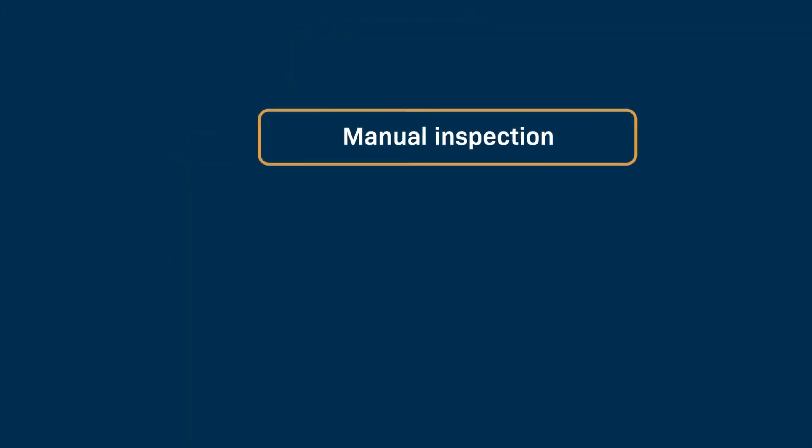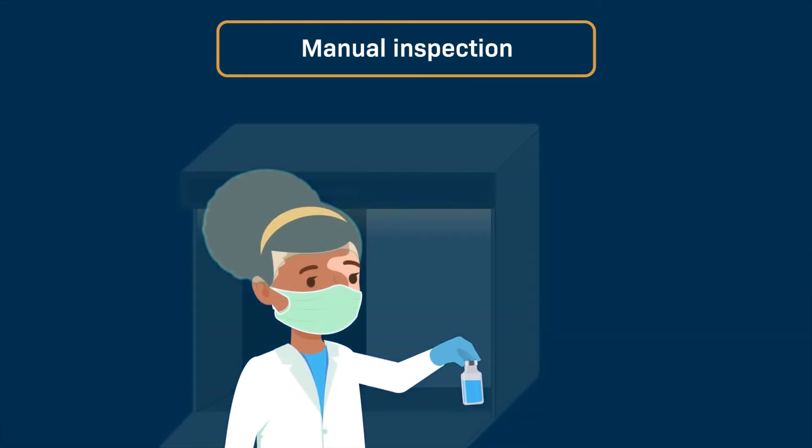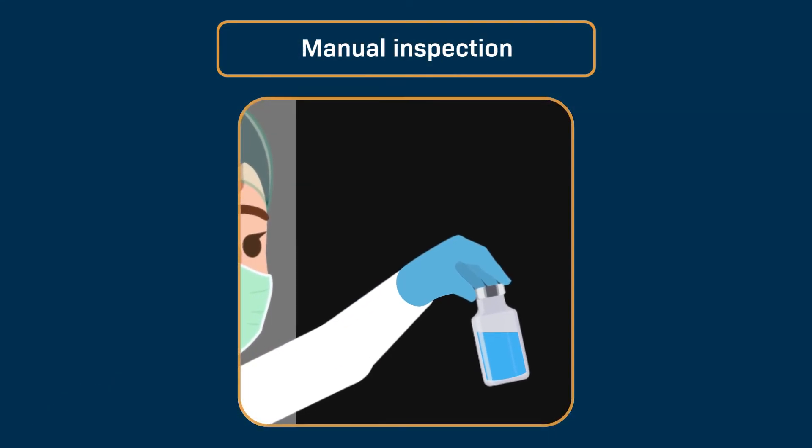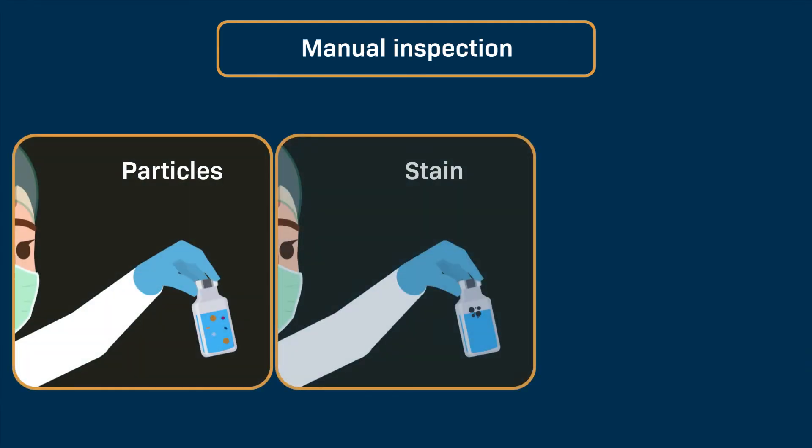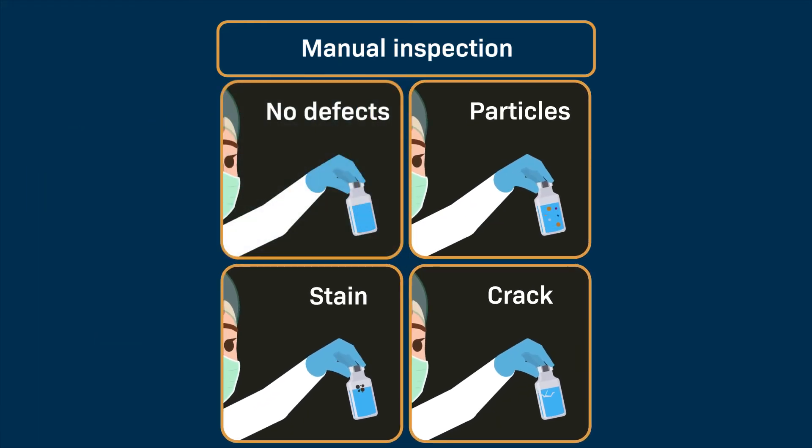In the manual visual inspection process, a trained inspector handles each container in a controlled environment that has the appropriate light and background to increase contrast. Such an environment is important because the inspector will manually rotate the container to view all of its surfaces in order to reveal defects such as particles, stains, or cracks. Based on their inspection, the inspector will make the decision to accept or reject the container.